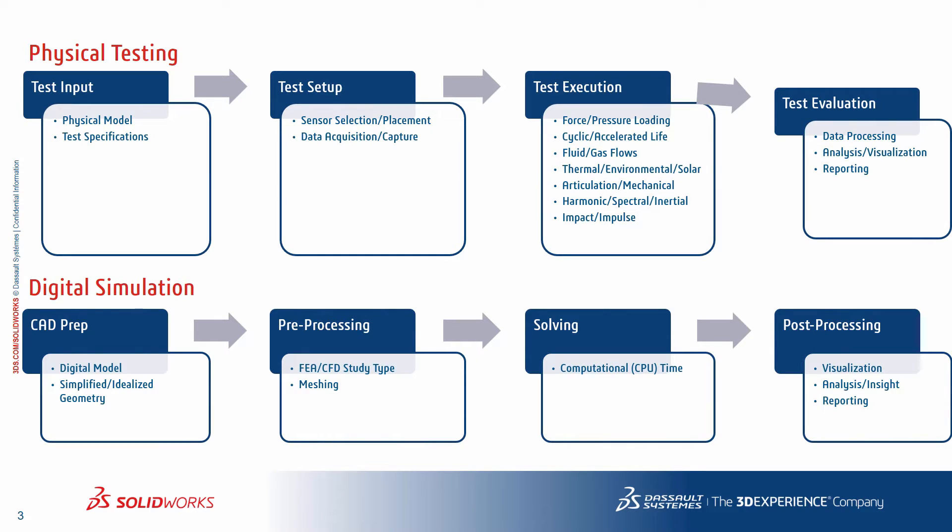Even in that first step, we're already making assumptions. If I am not analyzing the exact geometry that's the prototype, is my result going to be valid? How much of an assumption is that? And then how am I restraining it fixture-wise, and how am I going to represent that in the simulation, which gets us into pre-processing — setting up the boundary conditions in the CAD model. How is this thing held and restrained? And that's also the test setup.